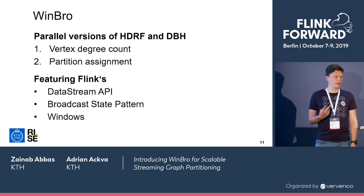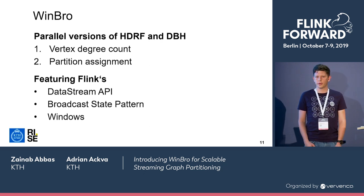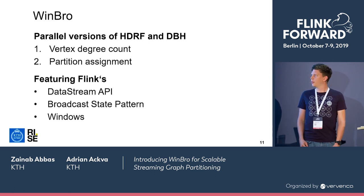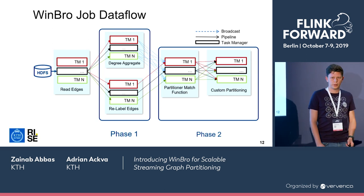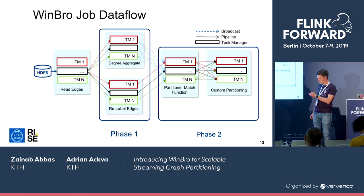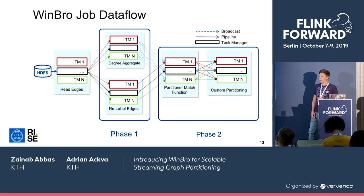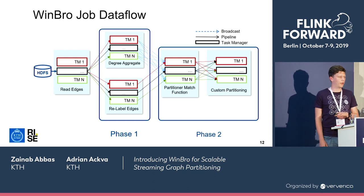We do the vertex degree count in the first step, as explained for DBH and HDRF, and then based on these vertex degrees we have the partitioning assignment in the second step. Looking at the Flink DAG with integrated parallelism, we start by reading edges, then in the second step degrees are aggregated or counted, and in the second phase the decision is made about where to place these edges.